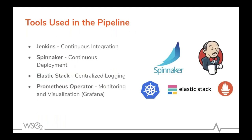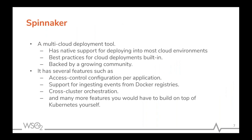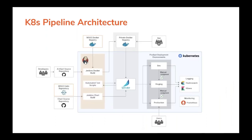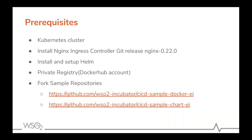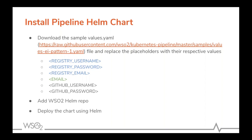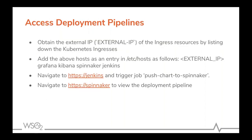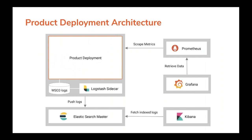We looked at the tools used in the pipeline: Jenkins, Spinnaker, Elastic Stack, and Prometheus operator. We explored Spinnaker and its important features. We discussed the Kubernetes pipeline architecture and showed three methods of delivering changes and updates. We went through the demo on how to install the Kubernetes pipeline, configure it for private registries and private GitHub accounts, and saw how it interacts with Elasticsearch and Prometheus to provide useful data important for running a production deployment — allowing real-time viewing of logs and performance metrics during updates.